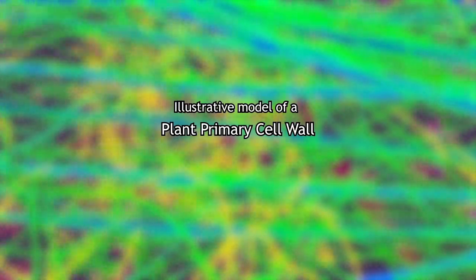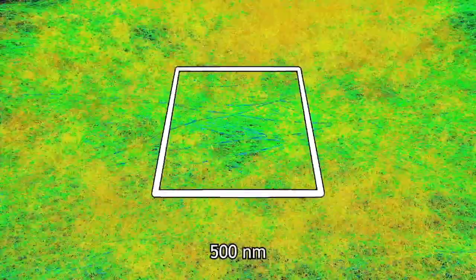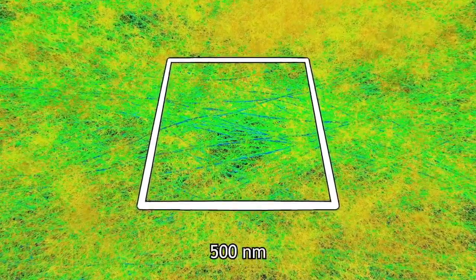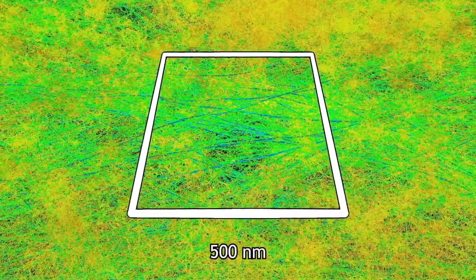The primary wall of plant cells has a composite structure that provides support and protection while remaining flexible enough for growth and expansion.